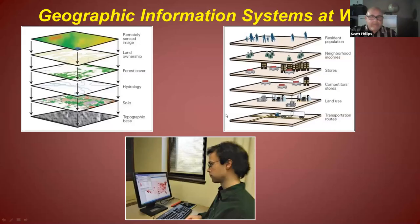I'll include some additional information, but I just want to illustrate with a couple examples. Here is maybe a GIS for looking at a park. You have land ownership, forest cover, soils, and so on. On the right, this may be an example of looking at where to open a business. You have population, stores, land use. So GIS is important not only in physical geography, but also economic or human geography as well.